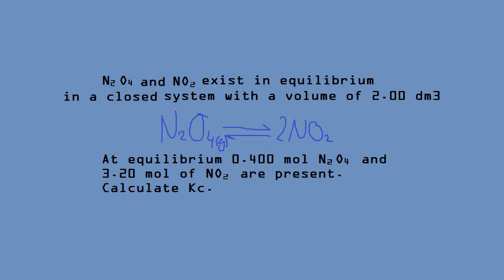Consider this a worked example for the first type of equation. N2O4 and NO2 exist in equilibrium in a closed system with a volume of 2.00 decimetres cubed. At equilibrium, 0.4 moles of N2O4 and 0.320 moles of NO2 are present. Calculate Kc.